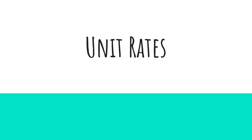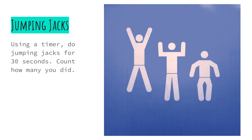Today we will complete some activities that are going to help us practice unit rate. Our first activity is intended to get you up and moving. I need you to have a timer set on your phone or on the computer because I want to know how many jumping jacks you can do in 30 seconds. So set the timer, start jumping, and count how many jumping jacks you can do in 30 seconds.